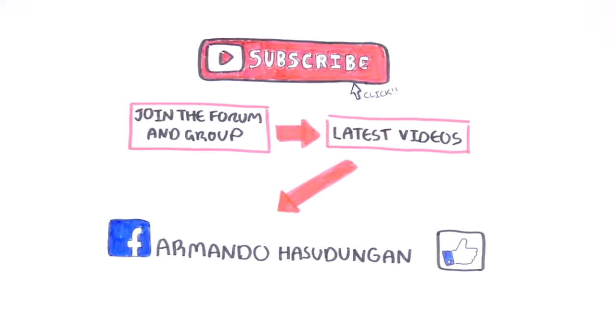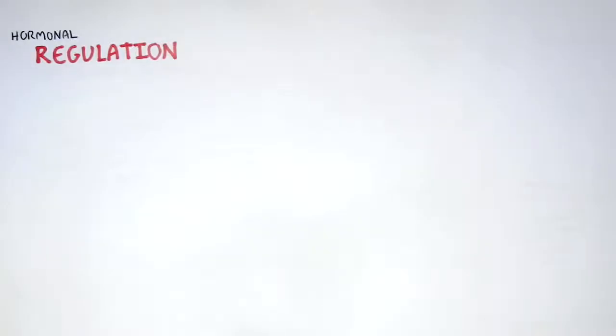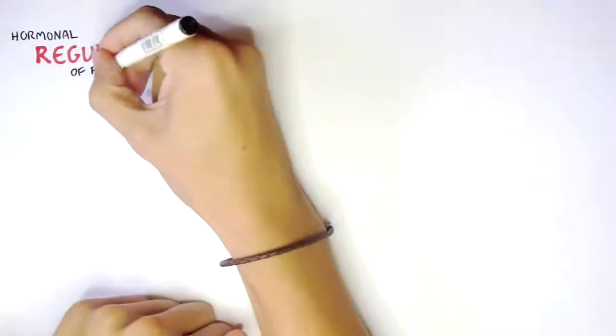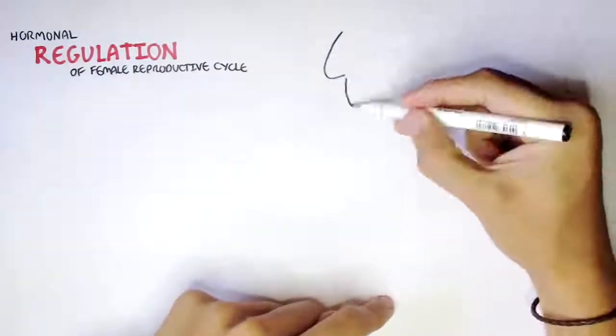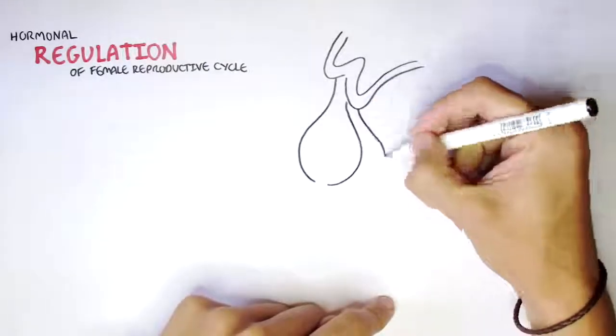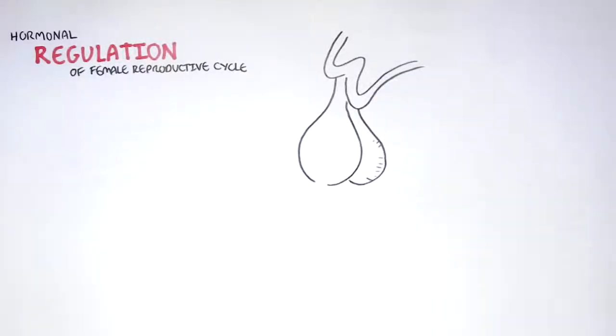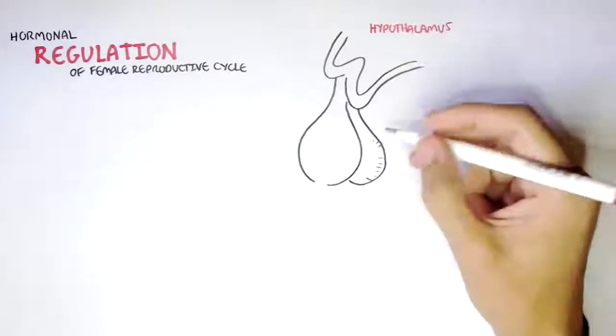In this video, we will look at the hormonal regulation of the female reproductive cycle — the menstrual cycle, basically. The hormones of the female are so much more complicated than the males, but hopefully we will be able to understand it by the end of this video.